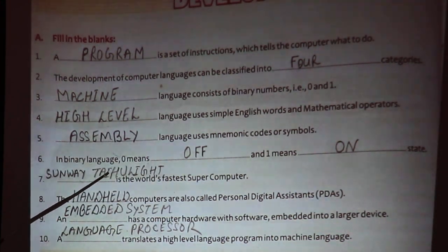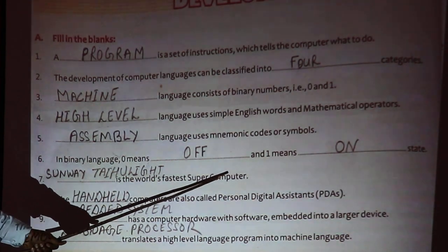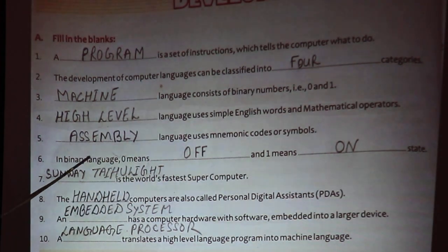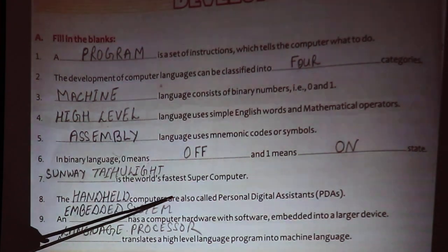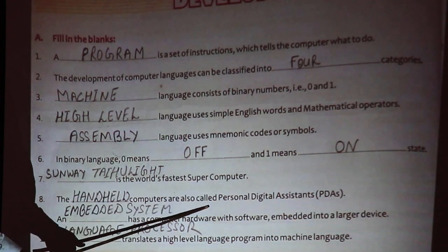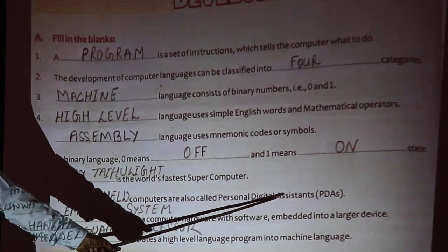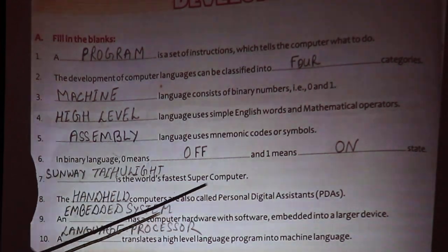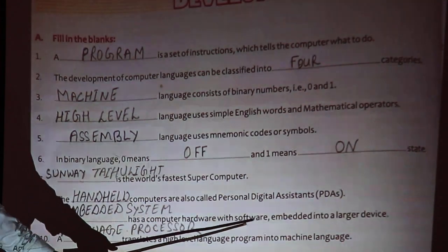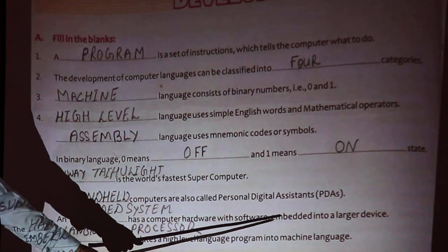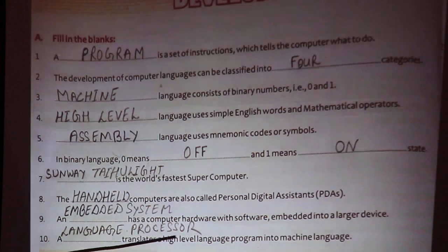Sunway TaihuLight is the world's fastest supercomputer. The handheld computers are also called personal digital assistants. An embedded system has computer hardware with software embedded into large devices.